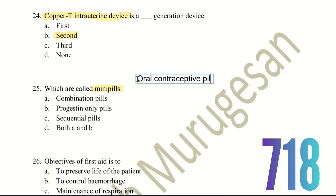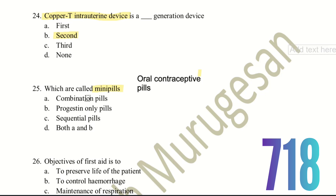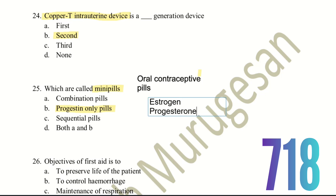Twenty-fifth question: which are called mini pills? The choices are combination pills, progestin only pills, sequential pills, or both A and B. Oral contraceptive pills have three types — combination pills, progestin only pills, and sequential pills. Progestin only pills are called mini pills because they contain only a low dose of progesterone.